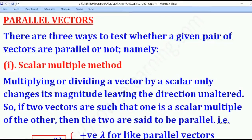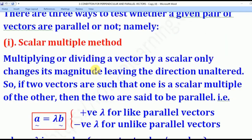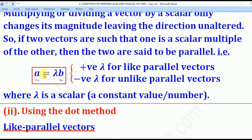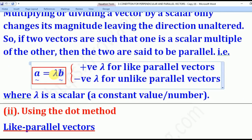Now we shall go to parallel vectors. There are three ways to test whether a given pair of vectors are parallel or not. The first method is known as the scalar multiple method. In this method, if two vectors A and B are parallel, it implies that A will be a scalar multiple of B — that is, A = λB, where lambda is a scalar, meaning a constant value or number.